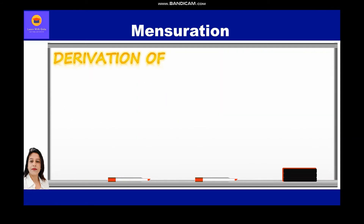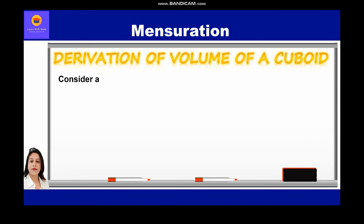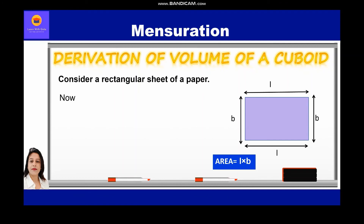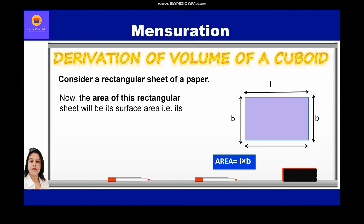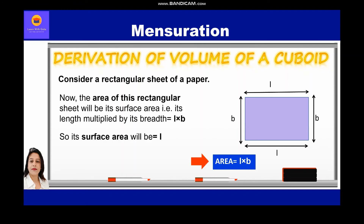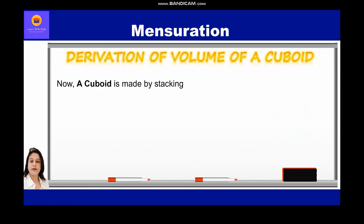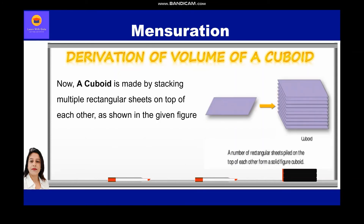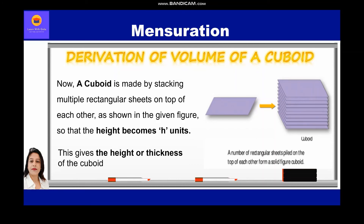Now we shall study the derivation of volume of a cuboid. Consider a rectangular sheet of paper. The area of this rectangular sheet will be its surface area, that is length × breadth. A cuboid is made by stacking multiple rectangular sheets on top of each other so that the height becomes h units. This gives the height or thickness of the cuboid as h. A number of rectangular sheets piled on top of each other form a solid figure — a cuboid.